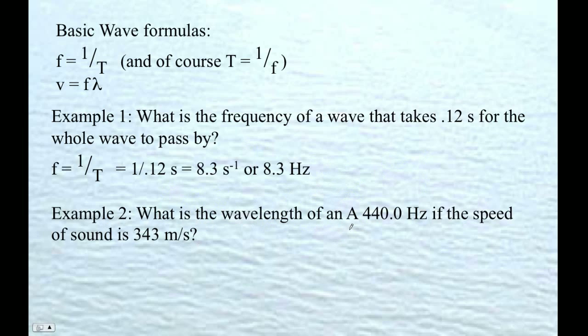And then here's our second example. What is the wavelength of an A440, the concert A that they play, if the speed of sound is 343 meters per second? This is really pretty easy. In one second, the wave will have gone 343 meters. It will be divided into 440 equal parts. So the wavelength has to be 343 meters per second divided by 440 hertz. So 343 divided by 440 is .7795 meters. And we have three sig figs, so rounding, it's .780 meters.